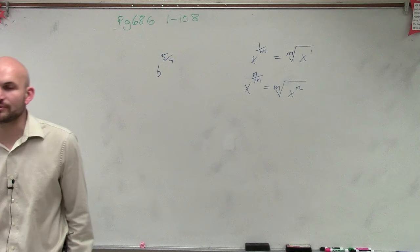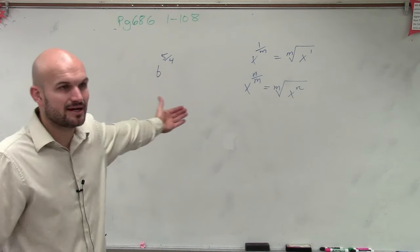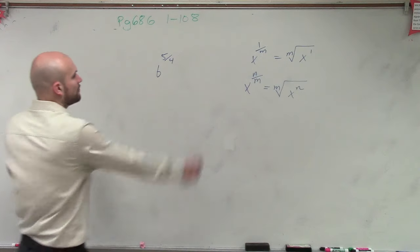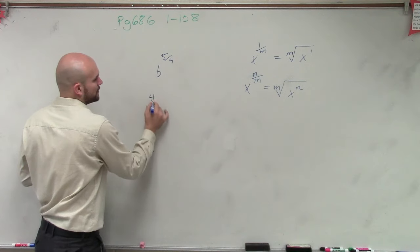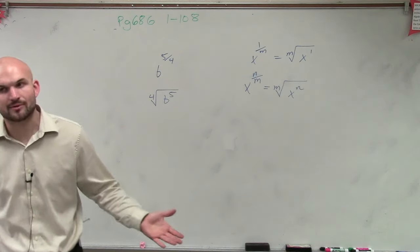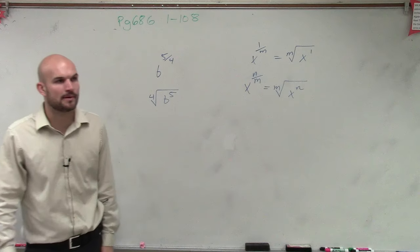So all they're asking us to do in this problem is just rewrite our exponent in radical form. Therefore, it's going to be the fourth root of b to the fifth power. Now, I can't evaluate this, but that's just what it's going to be in radical form.